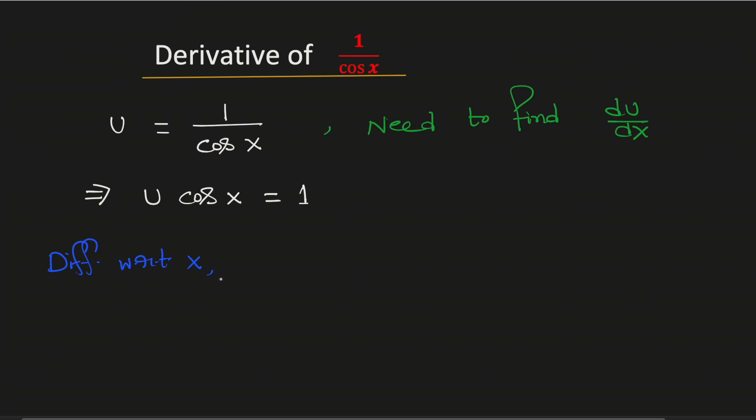By doing so we will get at first we will treat u as a constant and then we will write the derivative of cosine of x which is negative sine x. Plus now we will write the derivative of u with respect to x which is du dx. And we will treat cosine x as a constant.